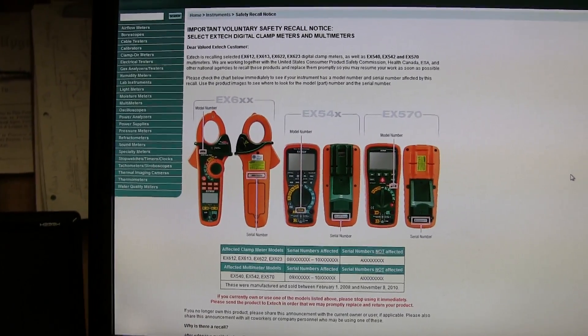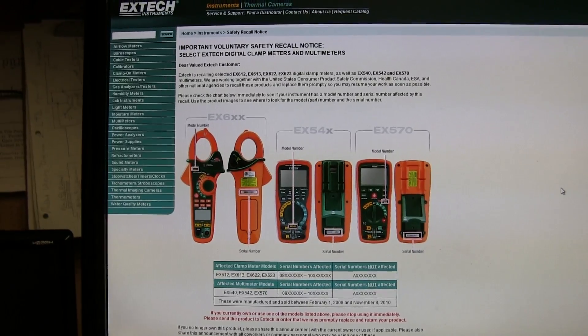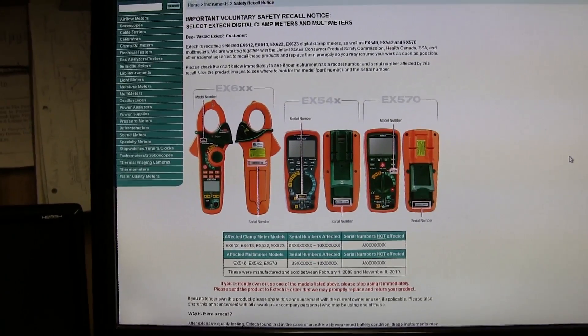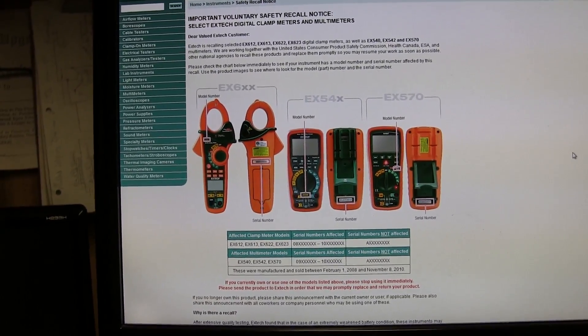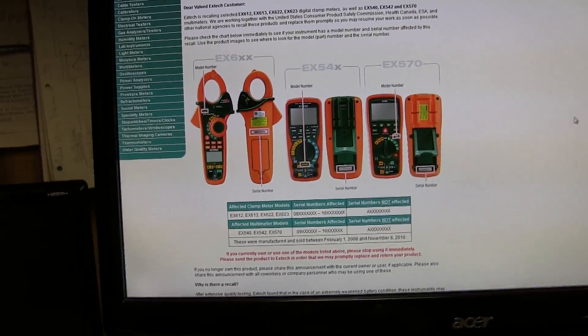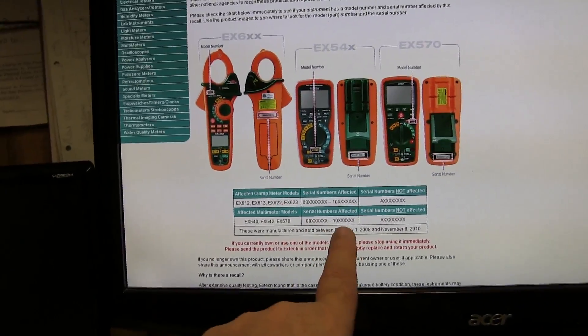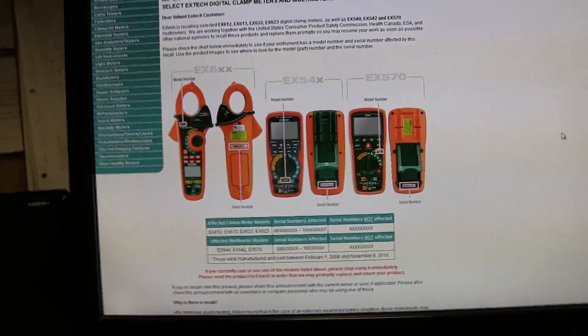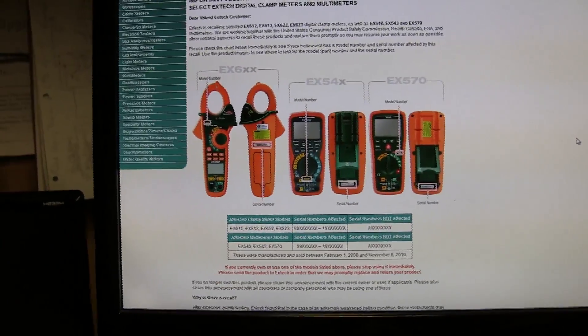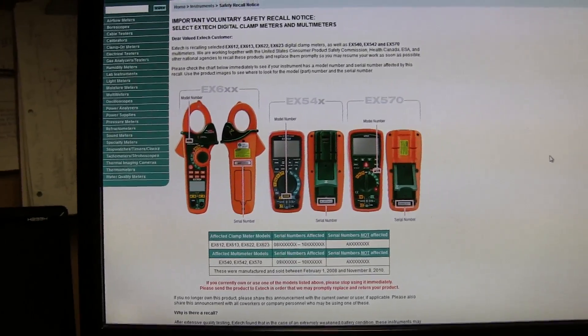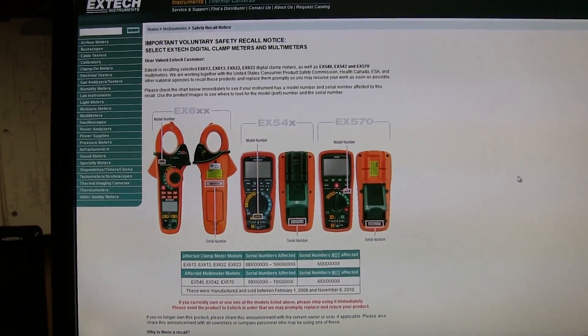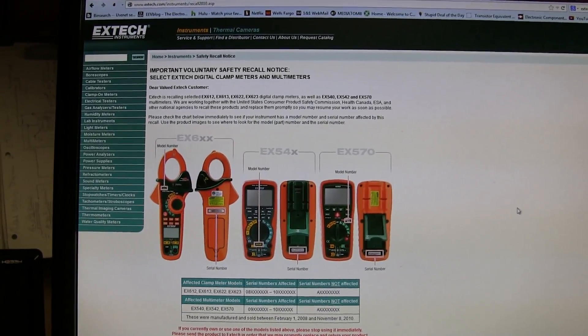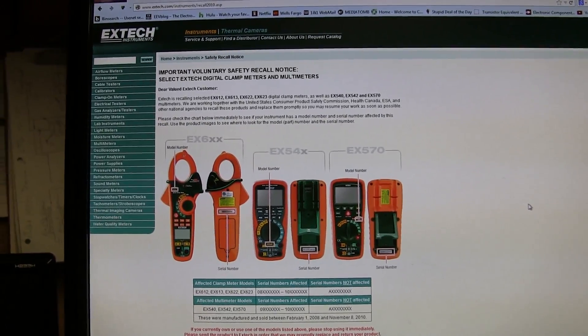So anyway, I called up Extech and told them that I had the EX540 meter and of course the first thing they asked me was the serial number because there's only a few of the meters that are affected and the serial numbers start with the 09 through 10x and of course I had a 10x meter. So I talked to a gal named Julie there at Extech and she's gladly sending me out a UPS call tag so all I have to do is slap the label on my meter, ship it back to them and as soon as they get the meter, they're going to send me out a brand new meter. No questions asked.